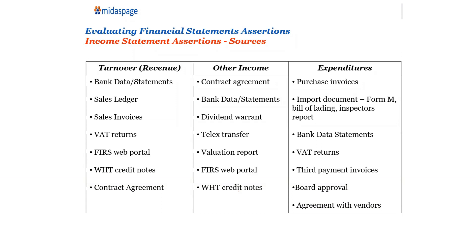So let them give you the telex transfer. If they have other income that is exempted from tax, ask for the valuation reports — investment valuation and all that. Then check the FRS portal and the returns credits. You can use all of this to confirm other income.